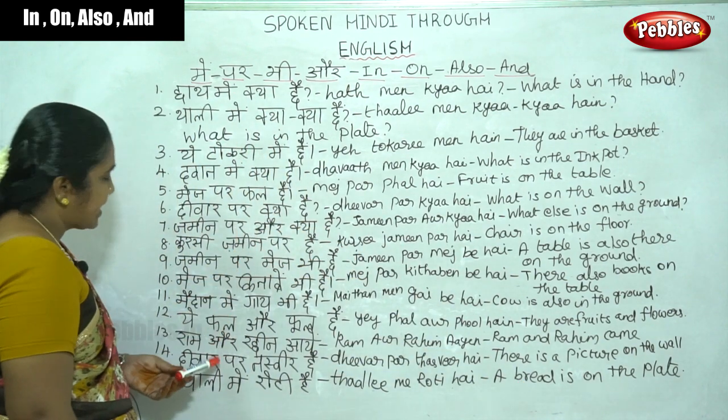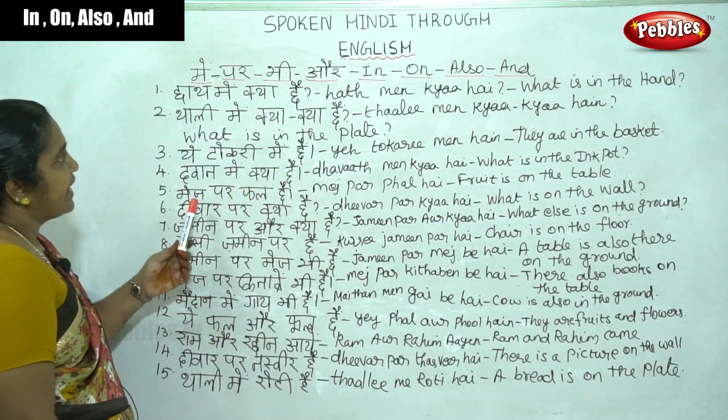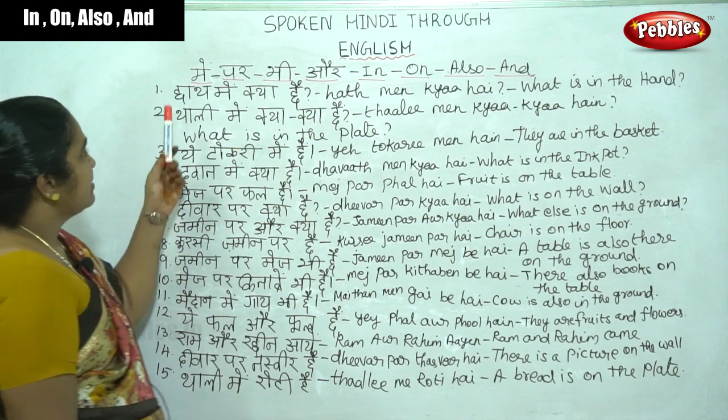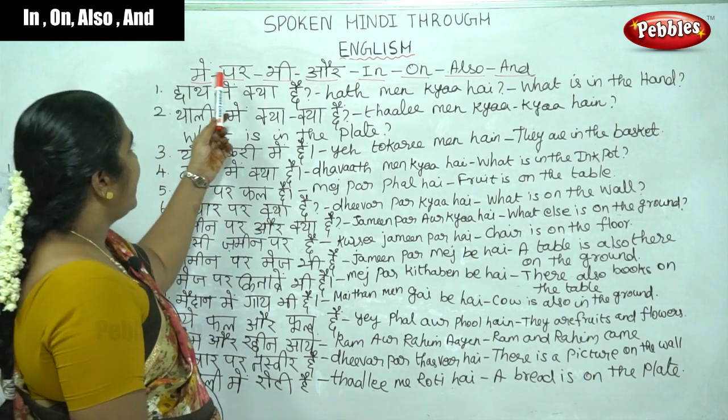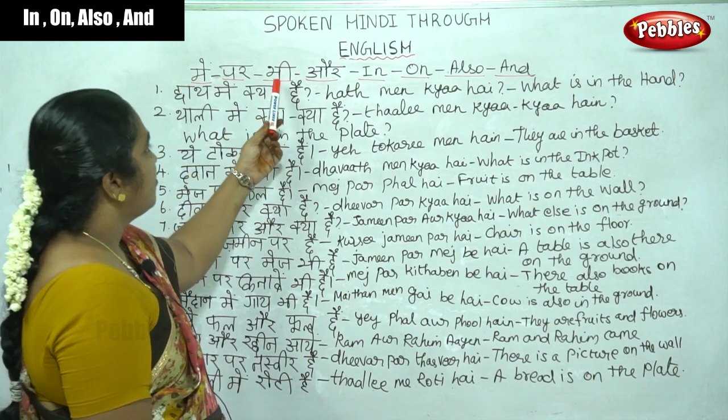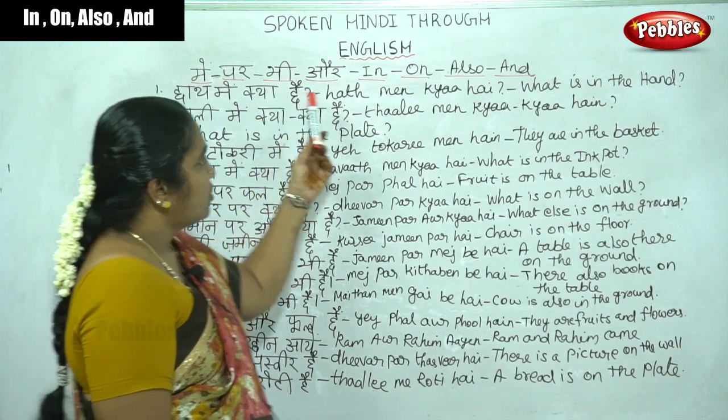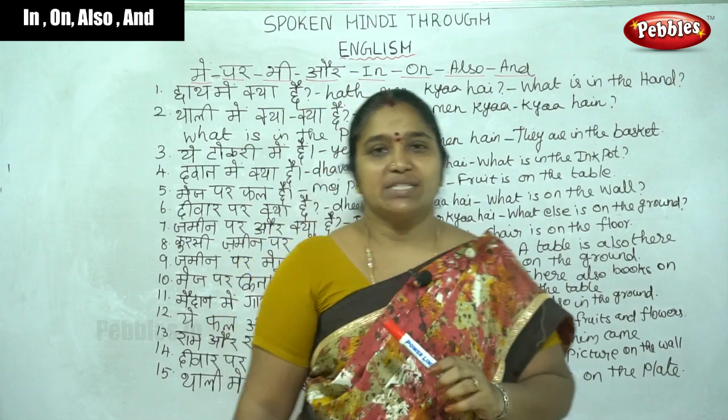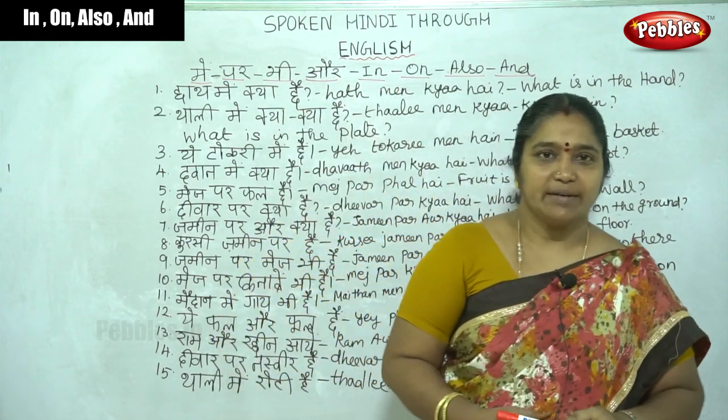Listening carefully, we can catch the key words: may, par, bi, aur. Can you understand? Is it clear?